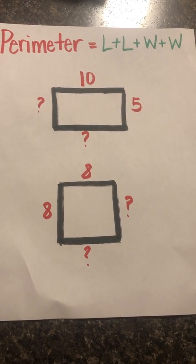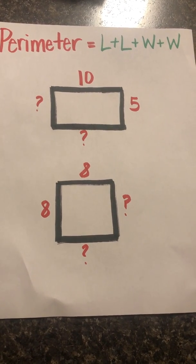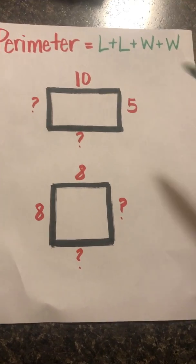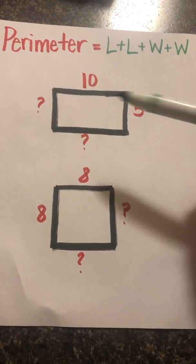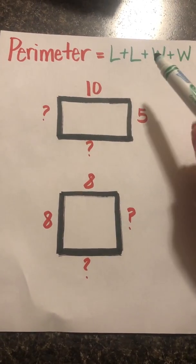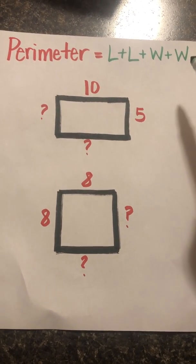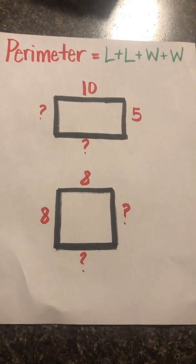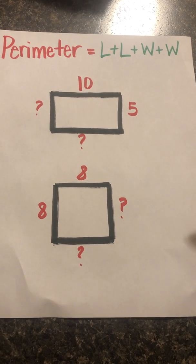Hi third grade, it's Miss Smith again. I know if you watched the last video, I talked a little bit about perimeter, so we're going to review: what is perimeter? Perimeter is the distance all the way around the whole object. When we are looking for perimeter, we follow the equation of length plus length plus width plus width. But today we're going to look at how can I find the perimeter of a rectangle or a square when there are missing side lengths.